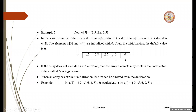If the array does not include an initialization, the array elements may contain unexpected values called garbage values. When an array has explicit initialization, its size can be omitted from the declaration. For example, 'int E[5] = {9, -5, 6, 2, 8}' is equivalent to 'int E[] = {9, -5, 6, 2, 8}' — you can initialize either way.